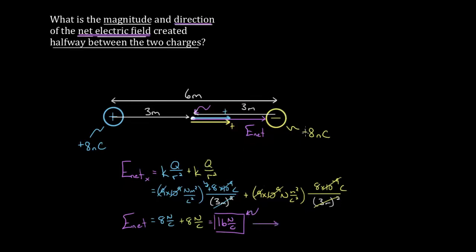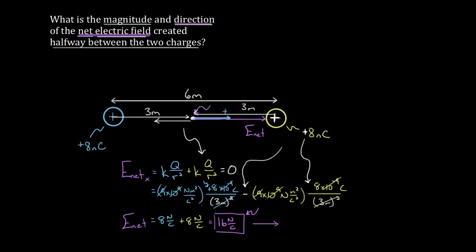What if we changed the negative eight nanocoulomb charge to a positive eight nanocoulomb charge? A positive charge creates a field radially away from it, so it would point to the left. That means its contribution to the net field would be negative — even though it's a positive charge, it points in the negative direction. So the total would be eight minus eight, giving zero newtons per coulomb. The electric field would completely cancel in the middle. You have to be careful with signs: always decide the sign based on the direction the field points, not the sign of the charge.